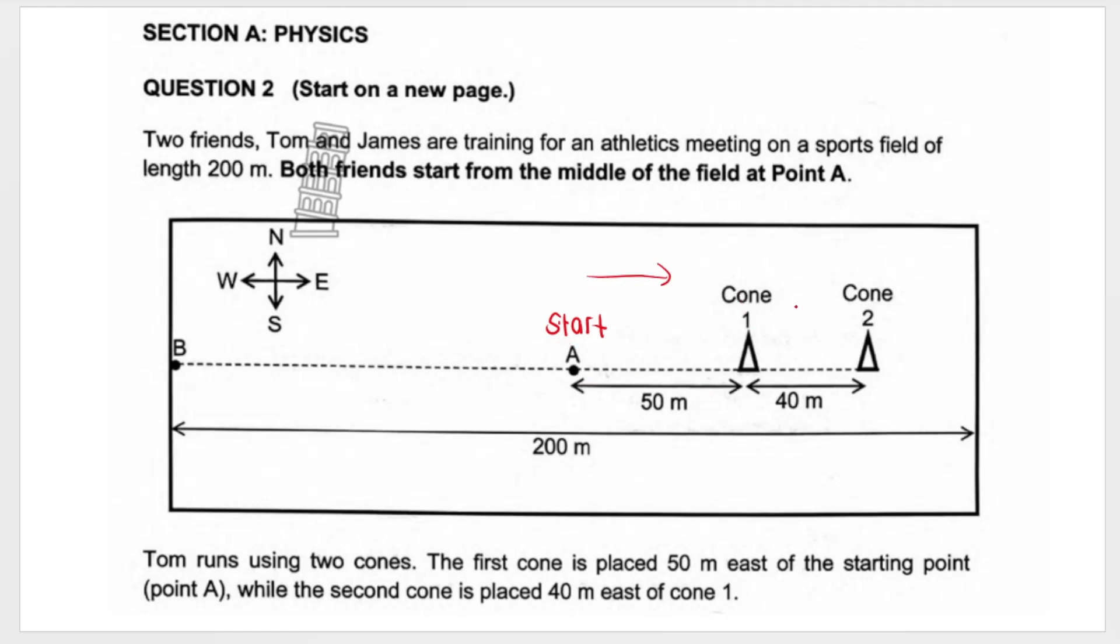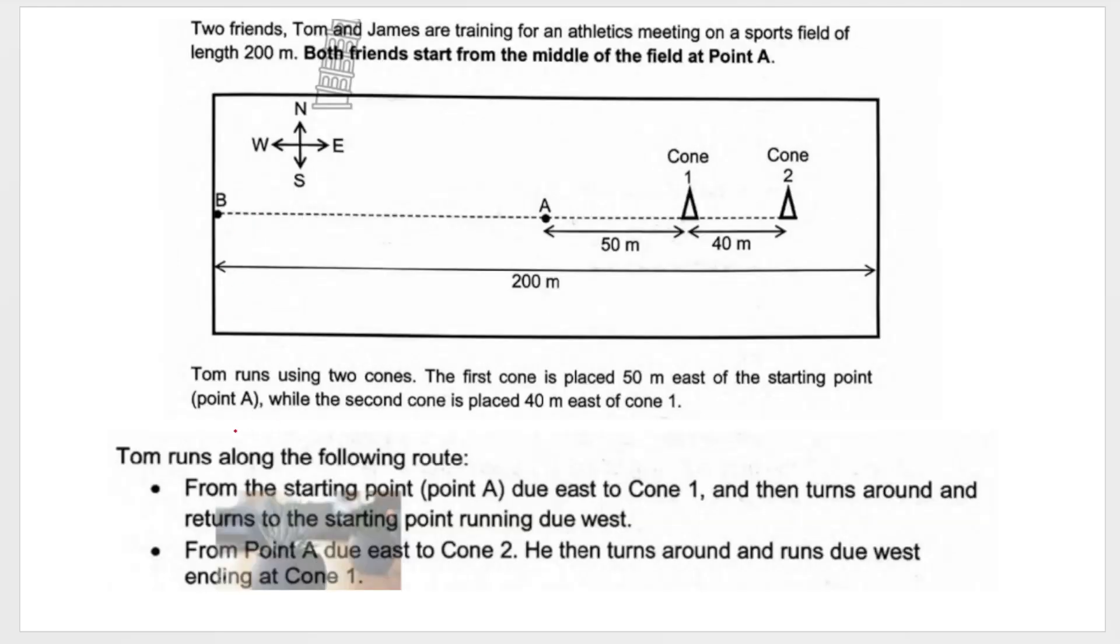And the second cone is placed 40 meters east of cone one. So basically cone two is 90 meters to the east of the starting point. Very important that you know the compass directions, but they do give it to you over here.